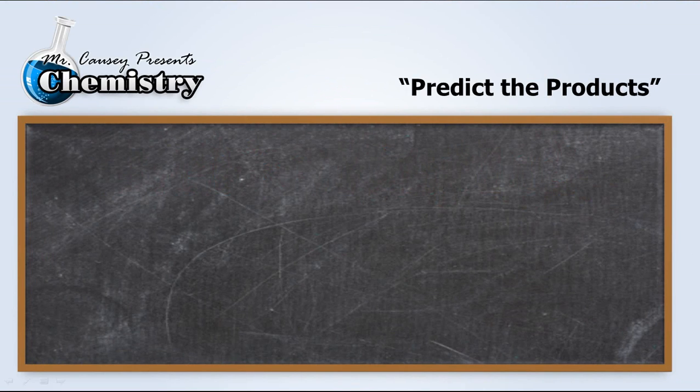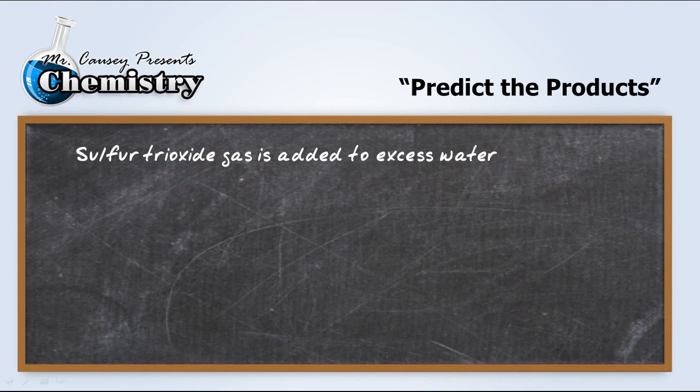Are you ready? Let's do it. Predict the products. Sulfur trioxide gas is added to excess water. Alright, let's first write our reactants. Sulfur trioxide gas, SO3, and we add that to water, and I would hope you would know that water is H2O, and a liquid.